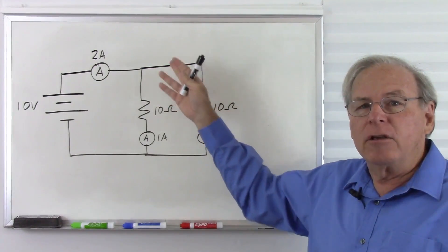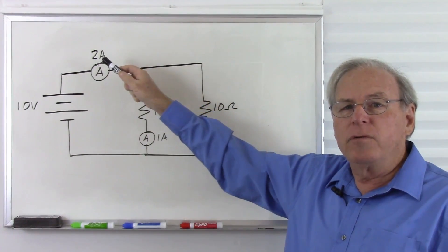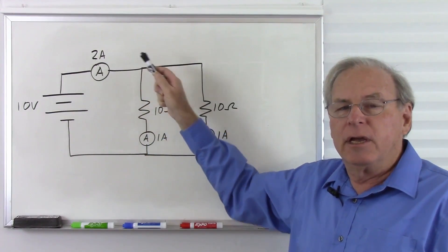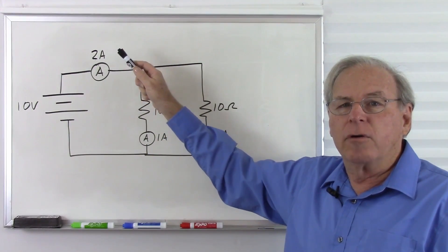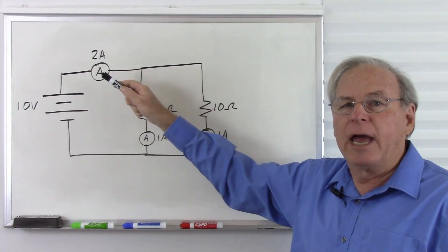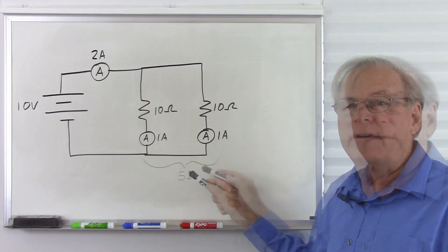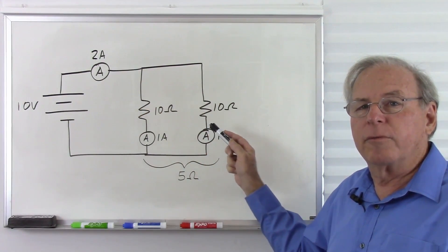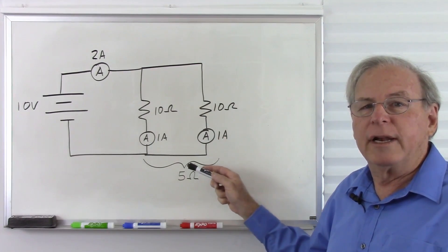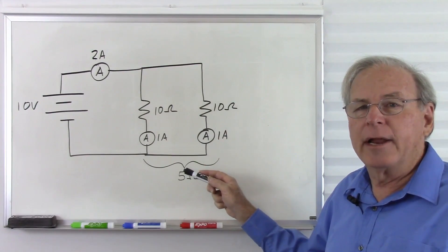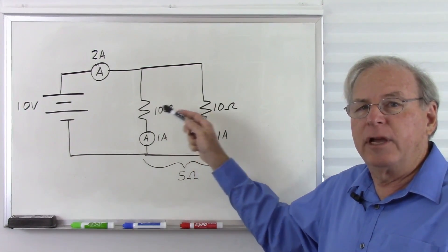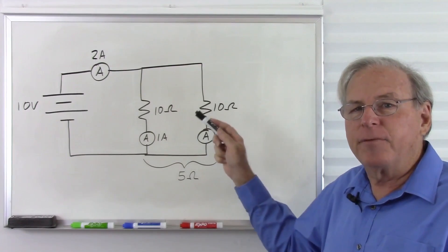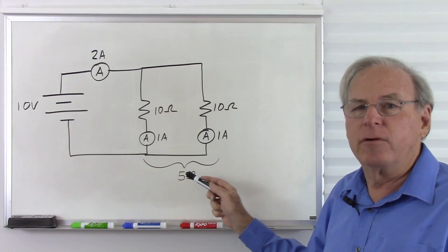Let's calculate that out using Ohm's Law. We now have 2 amps coming from the battery with a 10 volt battery. So 10 volts divided by 2 amps gives me a total of 5 ohms. So when I put the two resistors in parallel, my resistance went down, not up. Notice that I have two 10 ohm resistors — together they have half the resistance, so there's 5 ohms.